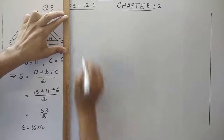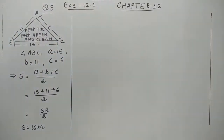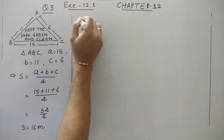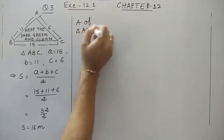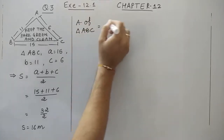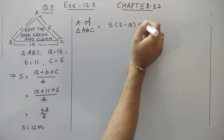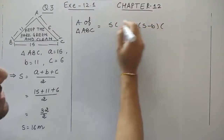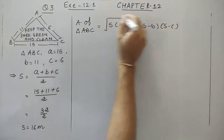Now let's find out the area of this wall using Heron's formula. Area of triangle ABC — write down the formula every time: square root of S times (S minus A) times (S minus B) times (S minus C).